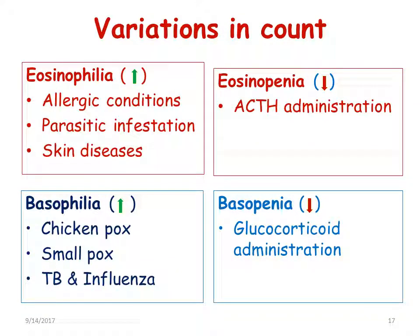Eosinophilia is when the eosinophil count goes above normal; eosinopenia is when it becomes less. Eosinophilia is seen in allergic conditions, parasitic infestations, and skin diseases. Eosinopenia is caused by adrenocorticotrophic hormone (ACTH) administration. Basophilia is an increase in basophil count above the normal less-than-1% level, seen in chickenpox, smallpox, tuberculosis, and influenza. Basopenia is caused by glucocorticoid administration.